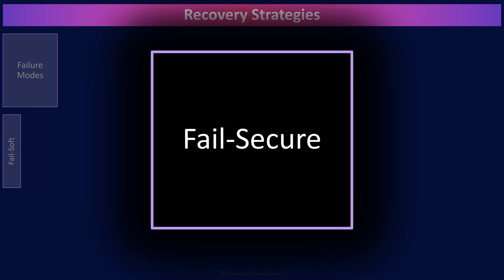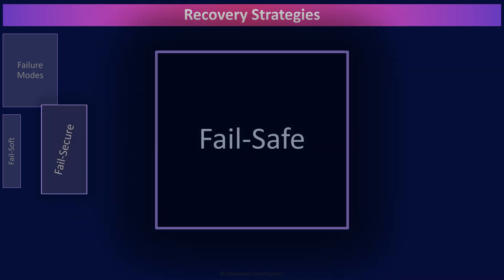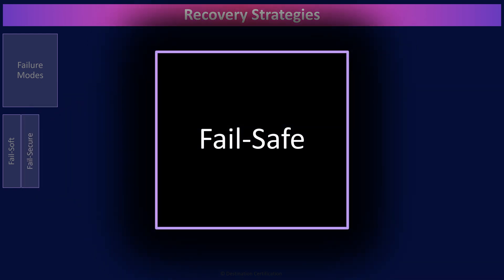Fail secure is the inverse. Fail secure means we design a system to fail to a more secure state. So for example, a firewall designed to fail secure might block all traffic in the event that it fails. This is why fail secure is often referred to as fail closed. Fail safe is completely different from the first two. Fail safe are physical security mechanisms designed to prioritize the safety of people above all else in the event of a failure. Doors in a building unlocking when the fire alarm goes off is a great example of a fail safe mechanism — it prioritizes the safety of people.